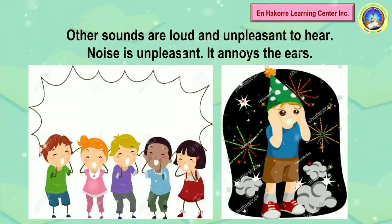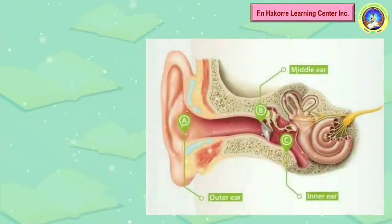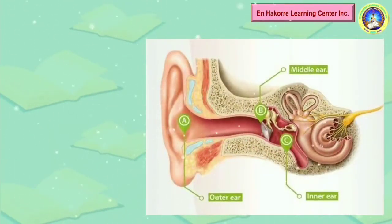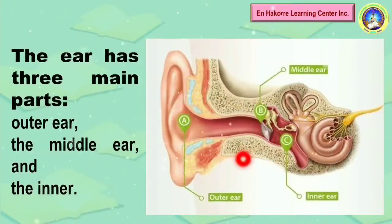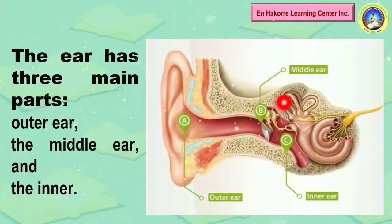Let us now discuss what are the different parts of our ears. The three major parts of our ears are the outer ear, the middle ear, and the inner ear. Again, the three main parts are the outer ear, the middle ear, and the inner ear.